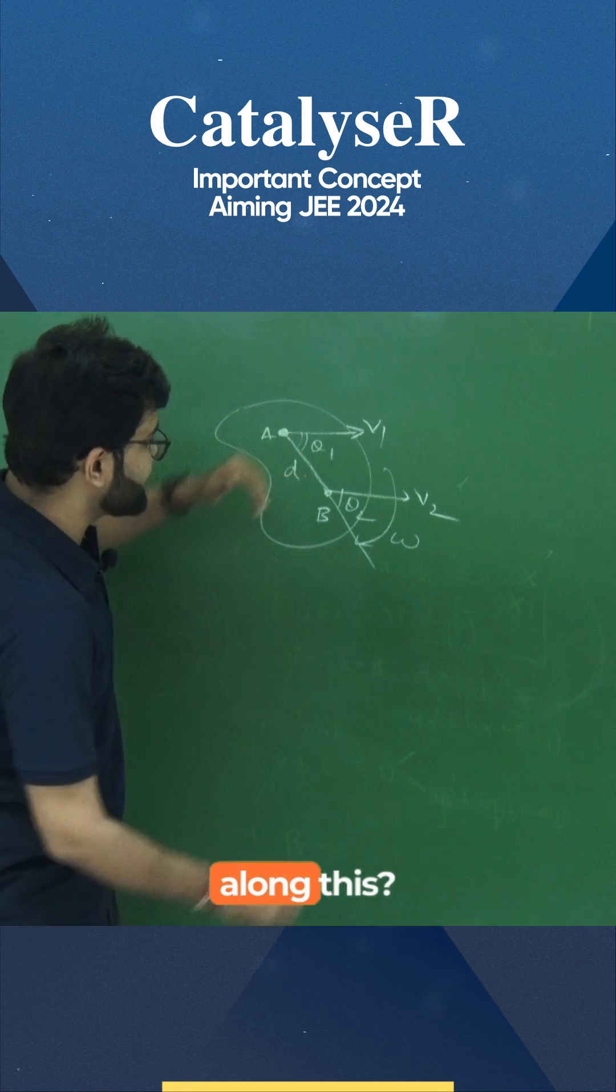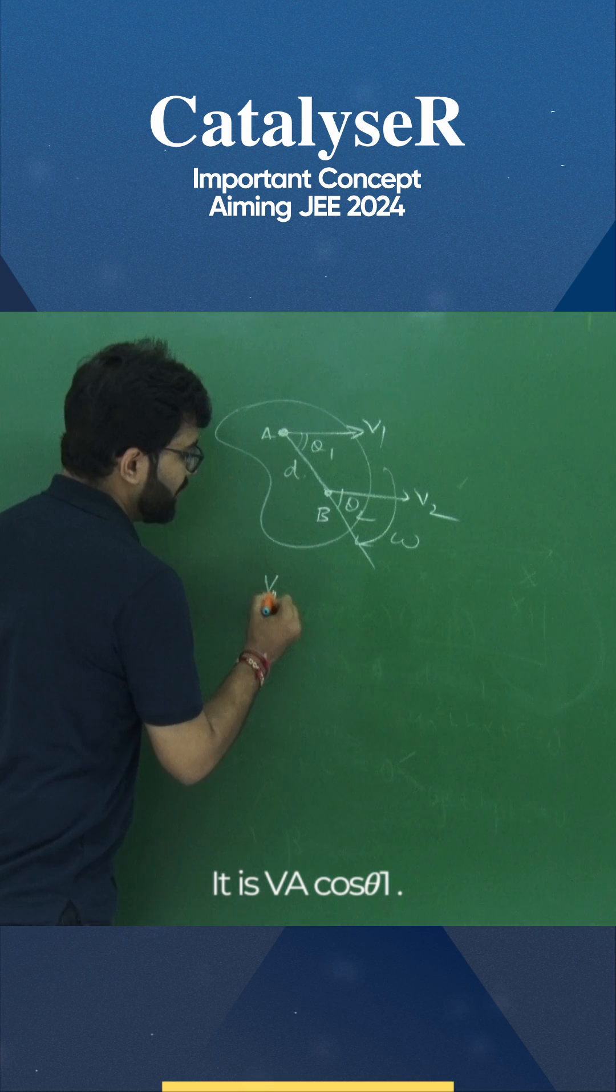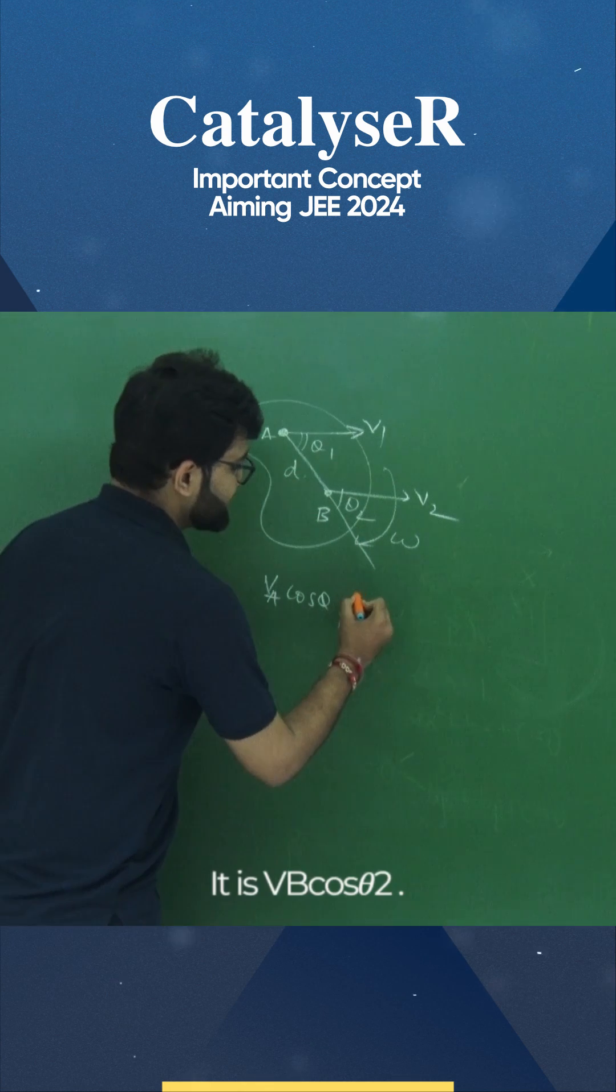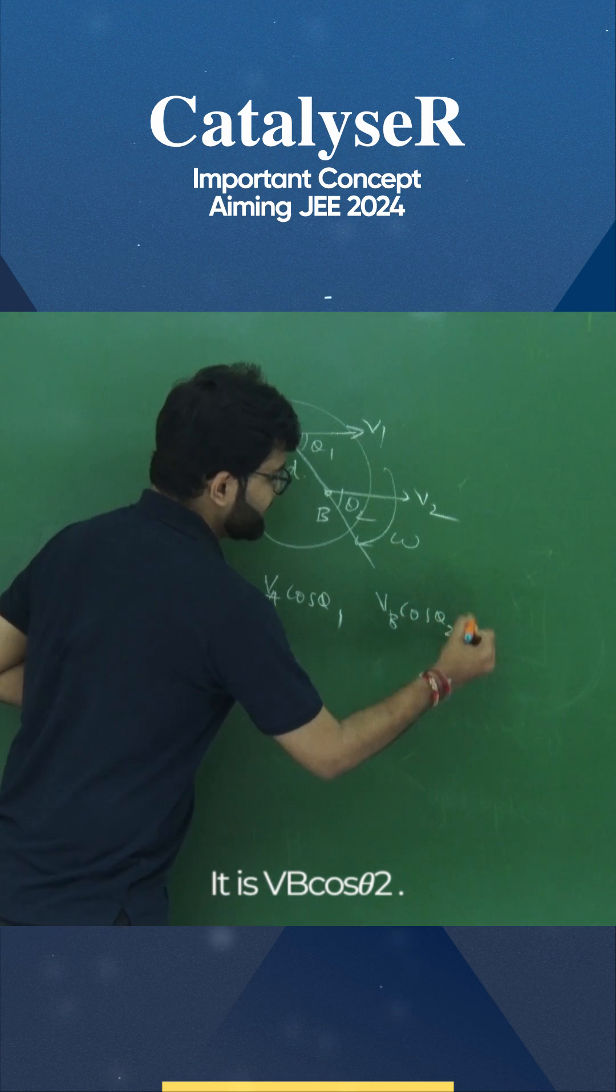What is the velocity of A along this? This is VA cos theta1 and what is the velocity of B here? This is VB cos theta2.